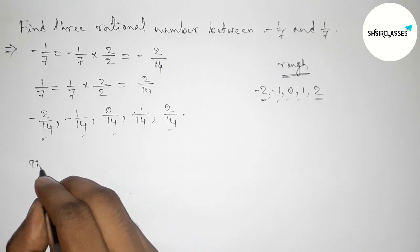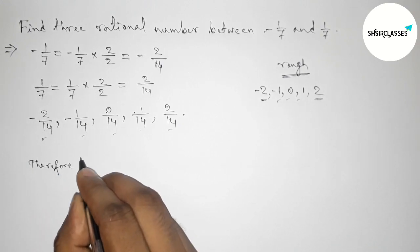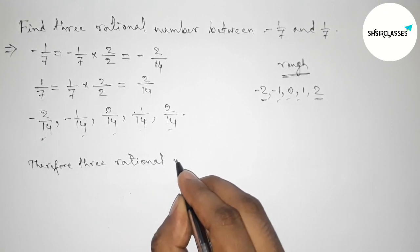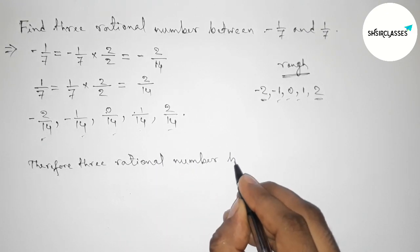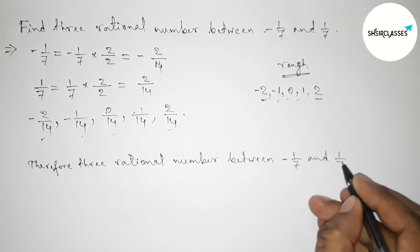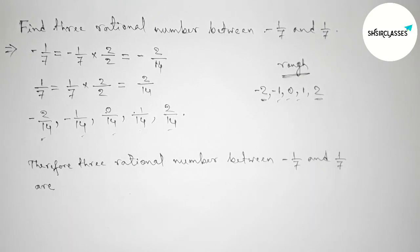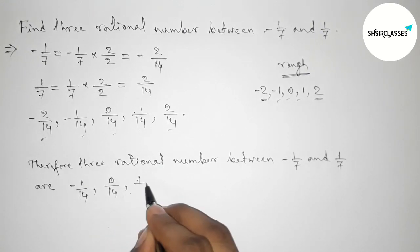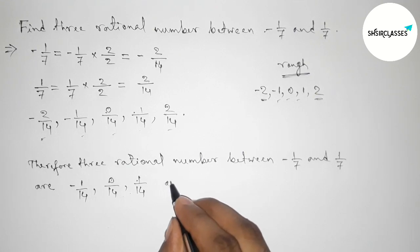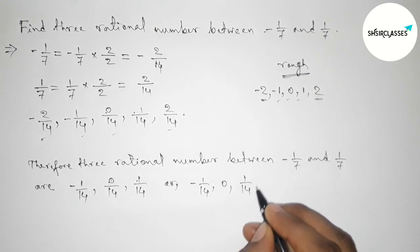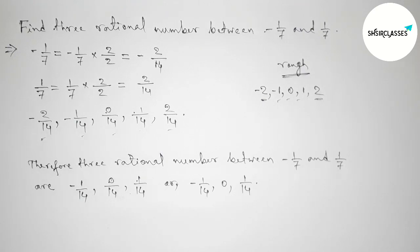Therefore the required 3 rational numbers between -1/7 and 1/7 are: first one is -1/14, then 0/14, then 1/14. Or we can write here -1/14 and that is 0 and 1/14.